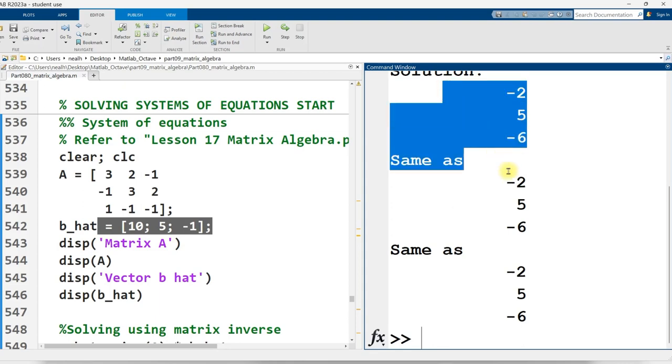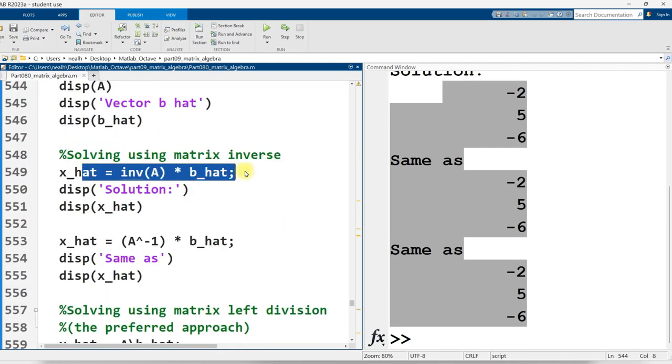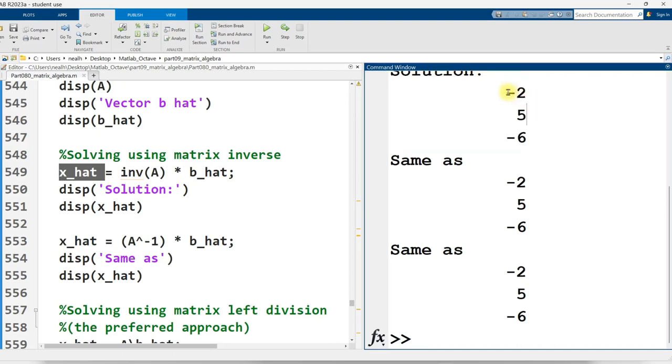And then I have three copies of the solution, because I'm going to do it three different ways. I'm actually going to do it four different ways. So the first way to solve it is use the inverse function on A, and matrix multiply that times B hat. And that gives us a vector, which I named x hat, of our x, y, and z values in that order.